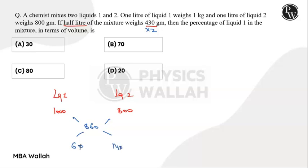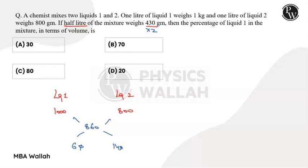So the required ratio turns out to be 3 to 7. Now the question asks for the percentage of liquid 1. Liquid 1 is 3, and the total is 3 plus 7, which is 10. So 3 out of 10 times 100 equals 30 percent.